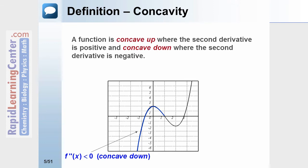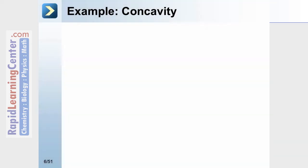The blue area shows the curvature of the graph to be concave down. The second derivative would be positive in the area in red, and that shows the curvature of the graph to be concave up. Let's look at an example of concavity.